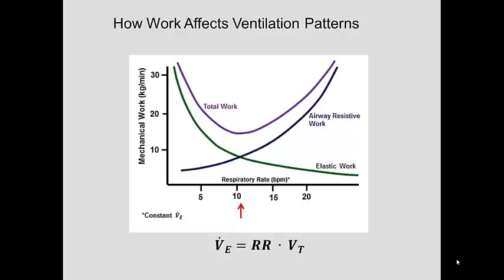When the respiratory rate is very high — rapid, shallow breaths — this maximizes the friction between the air and the airways, so the work to overcome the airway resistance becomes high at a higher respiratory rate.